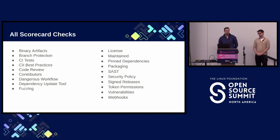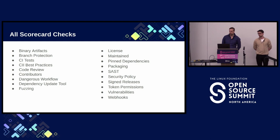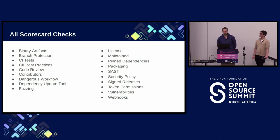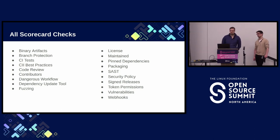The CII Best Practices check checks for an open source best practices badge, which requires some understanding of security best practices in software development. Then there's the Code Review check, which checks whether the project requires code review for PRs. There's the Contributors check, which runs a series of heuristics for the contributors of the project — for example, if a project does not have any external contributors at all, it could be a red flag, though not necessarily.